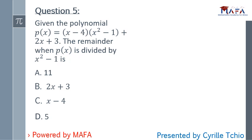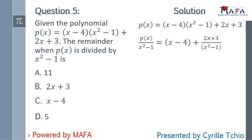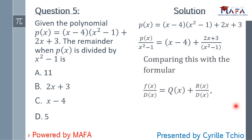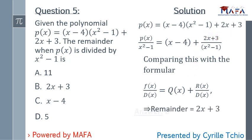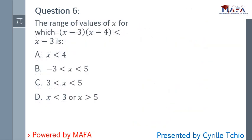Question five: given the polynomial p(x) equals (x−4)(x²−1) plus 2x plus 3, find the remainder when p(x) is divided by x²−1. Comparing with the division algorithm f(x) = quotient × divisor + remainder, we see that (x−4)(x²−1) is divisible by x²−1, leaving a remainder of 2x plus 3. The answer is B.